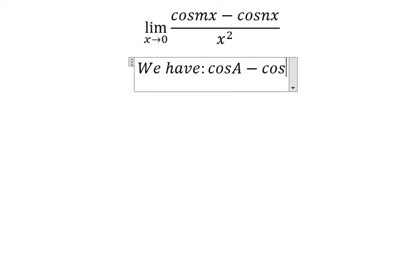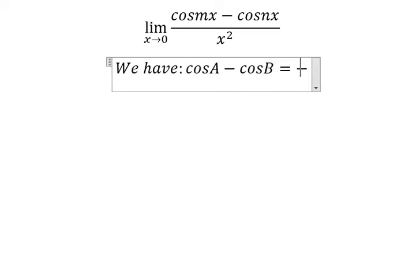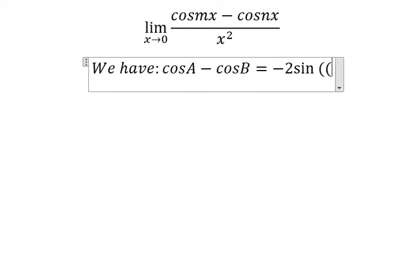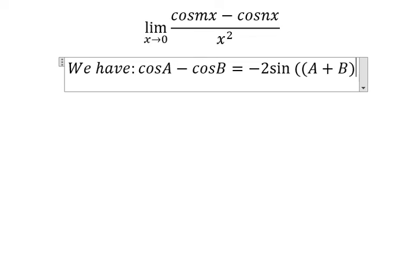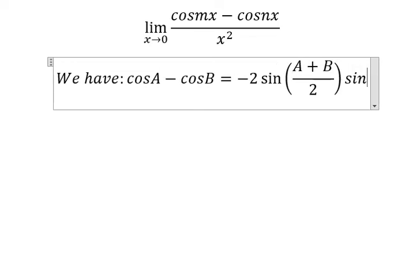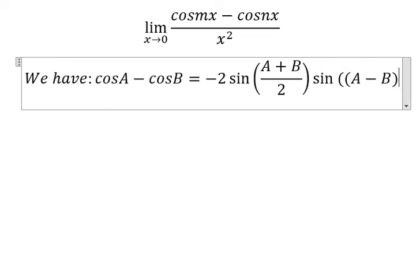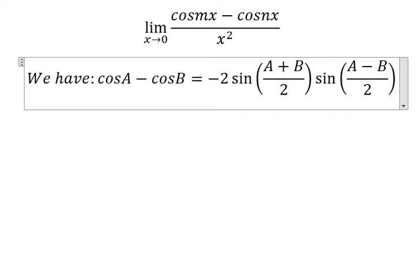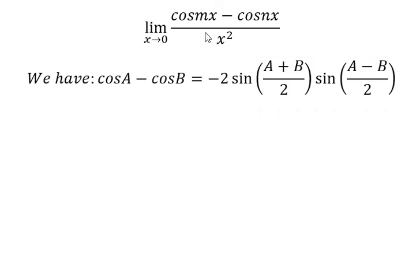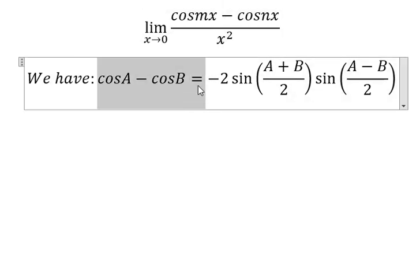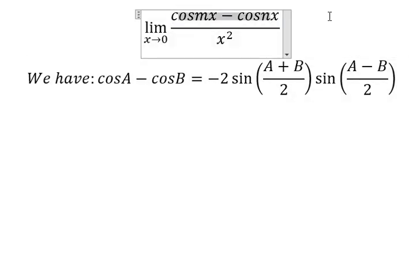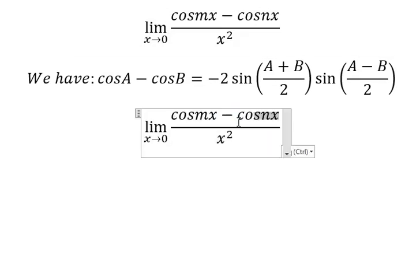Cosine A minus cosine B equals negative 2 sine of A plus B over 2, and we have sine of A minus B over 2. Now we apply this formula for this one in here. So they should be like this.